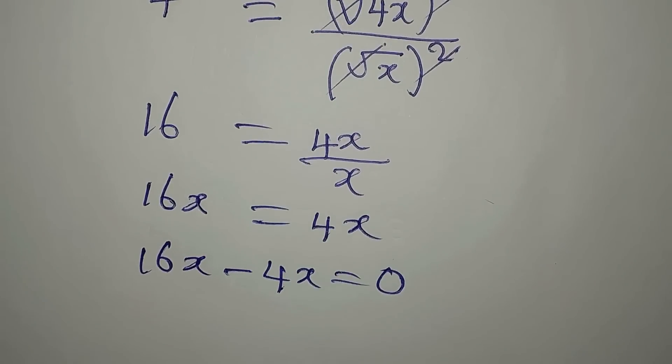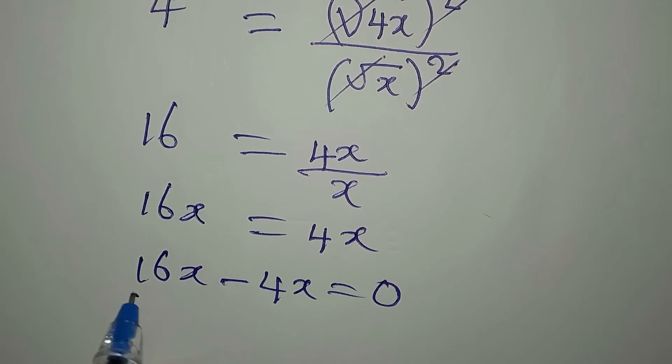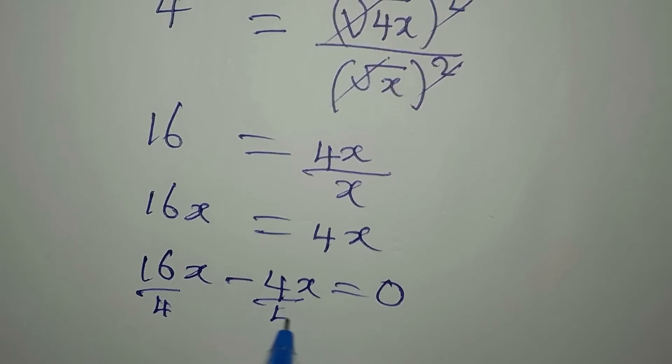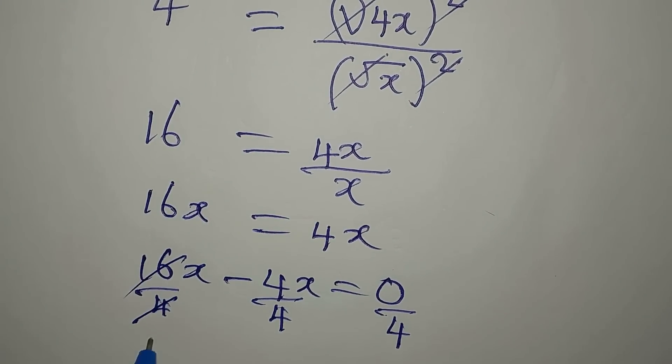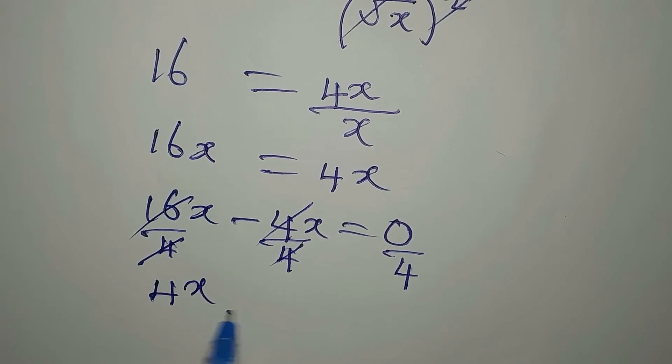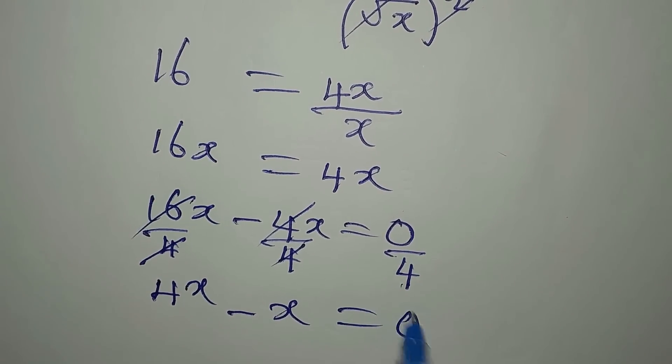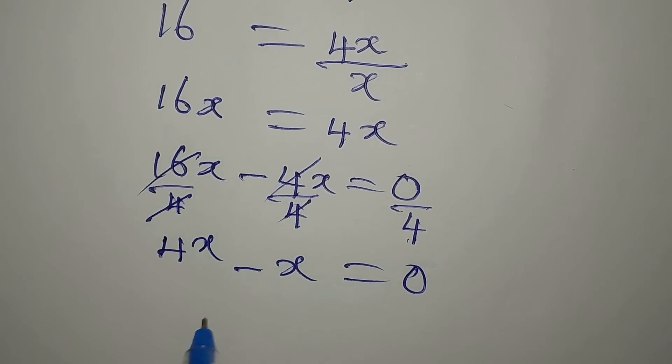Then we bring this to the left. So we have 16x minus 4x equals 0. If you remember, in the first method, we reduce the equation as we divide all through by 4. This will go there, we have 4x. This goes there, we have minus x. And 0 divided by 4 is 0.